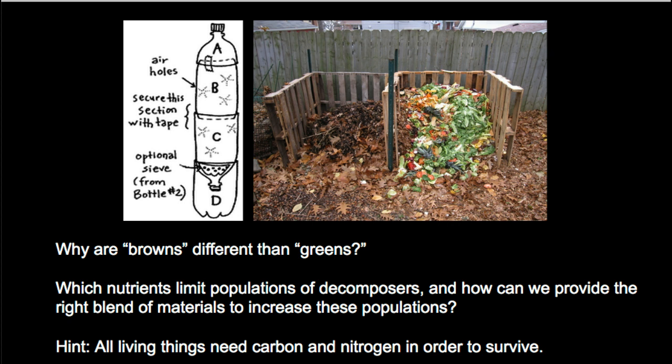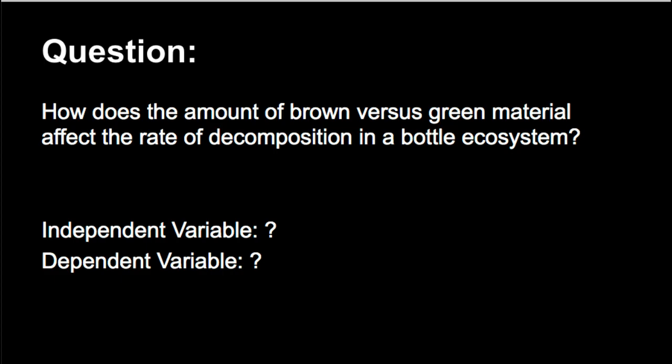Some questions you'll need to investigate on your own: first, why browns and greens are actually different in terms of nutrients; and second, which of those nutrients limit the populations of decomposers and how we can provide the right blend to increase these populations. One hint: all living things need carbon and nitrogen in order to survive, so it's going to have something to do with carbon and nitrogen — but I'll let you research that. The question we're investigating is: how does the amount of brown versus green material affect the rate of decomposition in a bottle ecosystem?